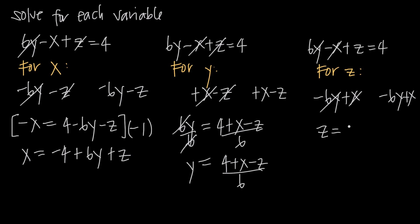And on the right-hand side, we end up with 4 minus 6y plus x. And because we have z by itself, we've solved for z. And that's how you solve multivariable equations.